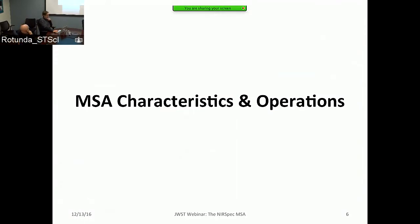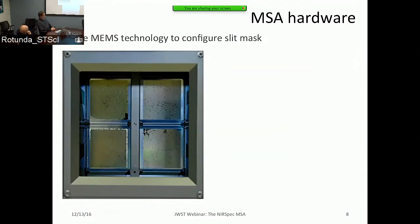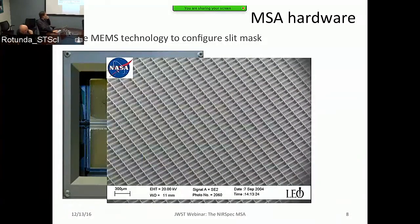That's a top-level overview of the instrument. Now let's go on to the MSA itself. NIRSpec is very much an international collaboration, with many different European countries responsible for constructing and testing many parts of the instrument. The MSA — the micro shutter subsystem — was developed and constructed by NASA at Goddard Space Flight Center.